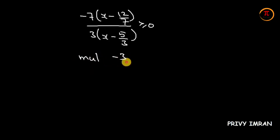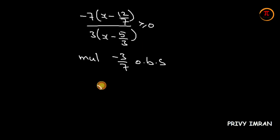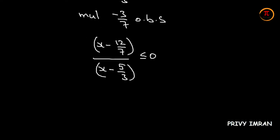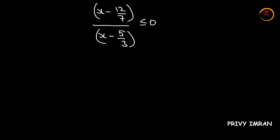Now let me multiply both sides by minus 3/7. When we multiply by a negative value, the inequality sign changes. So (x minus 12/7) divided by (x minus 5/3) becomes less than or equal to 0.